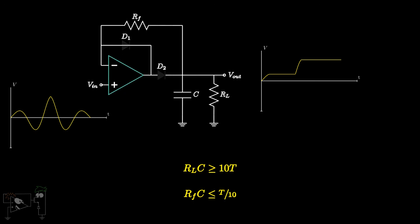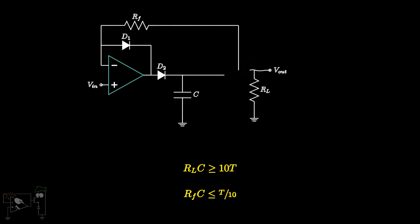Note that as D2 is reverse biased, this does not affect the capacitor. Further, the discharging of the capacitor can be prevented by introducing a buffer before the load resistance.